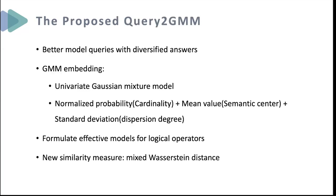To better model queries with diversified answers, we propose Query2GMM, a novel query embedding approach for complex logical query answering. In Query2GMM, we present the GMM embedding to represent each query based on a univariate Gaussian Mixture Model. Each subset of a query is encoded by its cardinality, semantic center, and dispersion degree, elegantly corresponding to the normalized probability, mean value, and standard deviation of a univariate Gaussian Mixture Model. We also formulate effective models for four logical operators and design a new similarity measure called mixed Wasserstein distance, allowing for computing relationships between entities and multiple answer subsets, and enabling bidirectional learning for queries and answer entities.